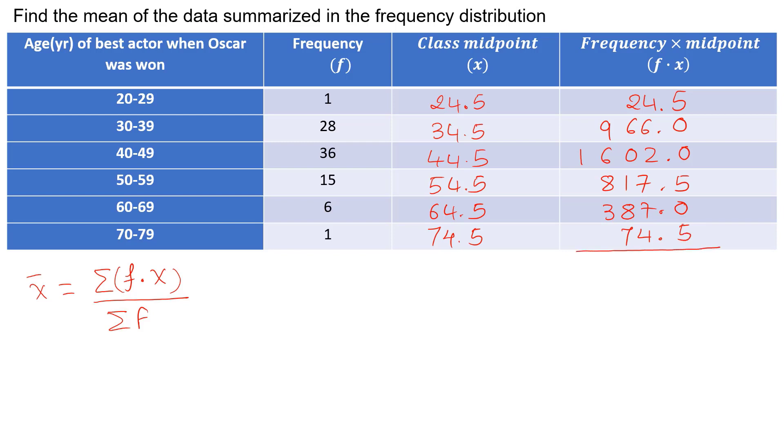Add up this product. And that equals the sum of f times x, which is equal to 3871.5.